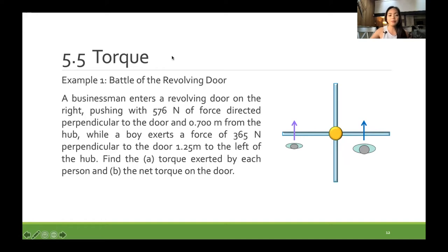For this one, I will solve first the torque exerted by each person. So for the boy, I have a force of 365 perpendicular. This is the direction of the force.